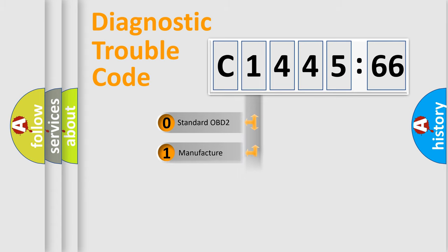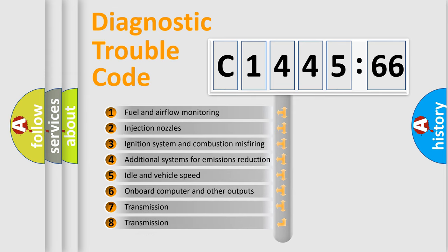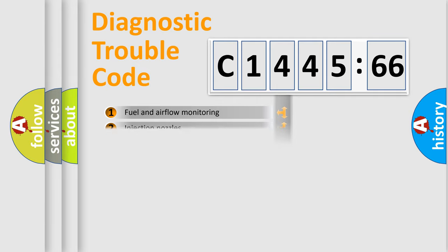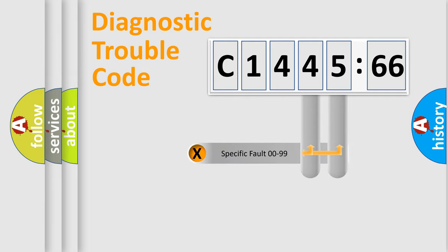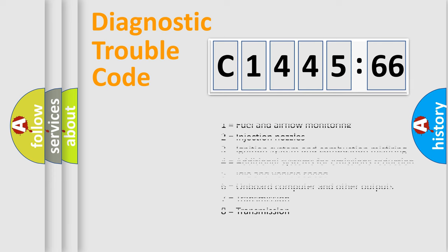If the second character is expressed as zero, it is a standardized error. In the case of numbers 1, 2, 3, it is a car specific error. The third character specifies a subset of errors. The distribution shown is valid only for the standardized DTC code. Only the last two characters define the specific fault of the group.